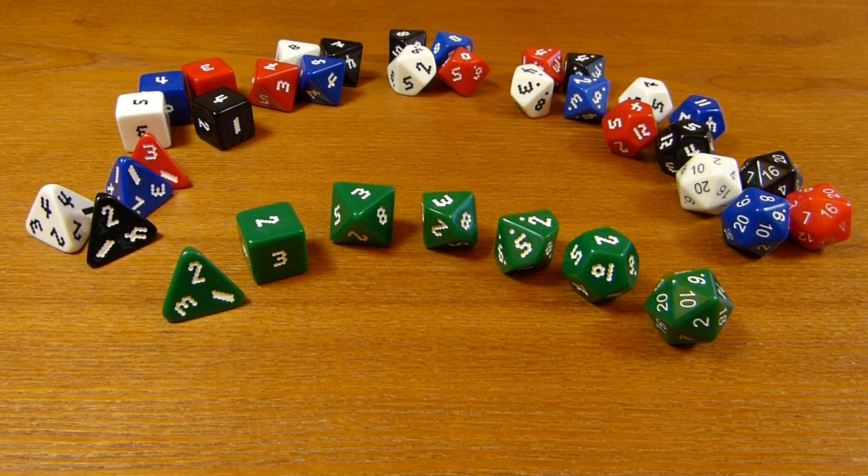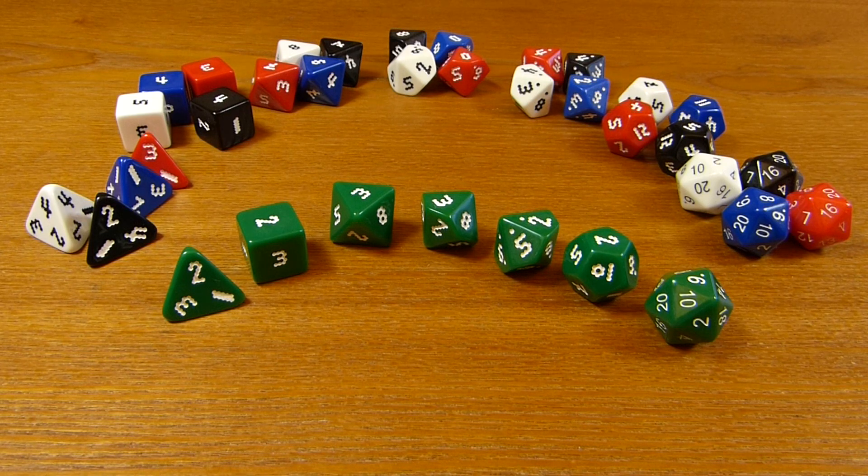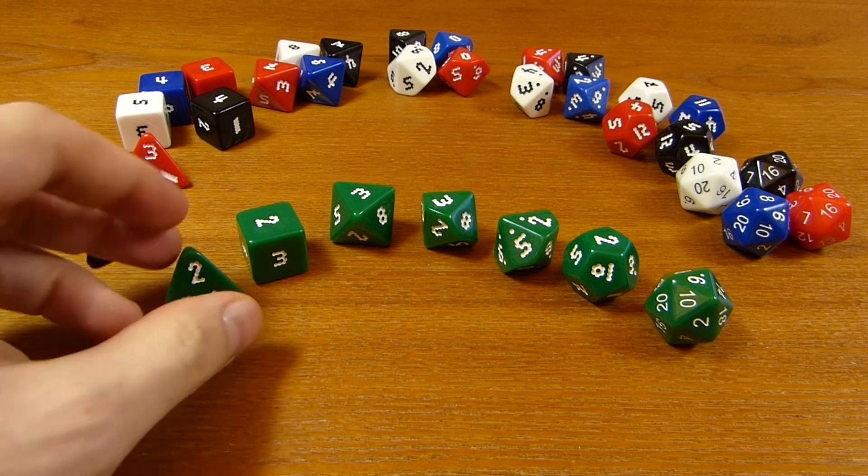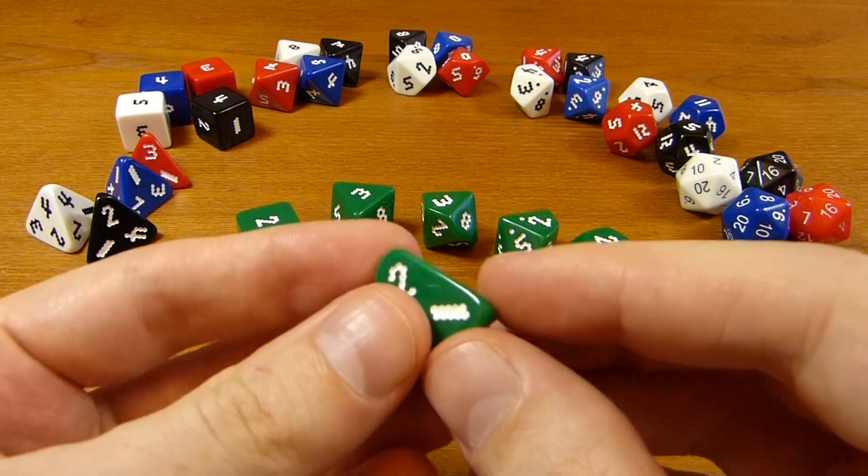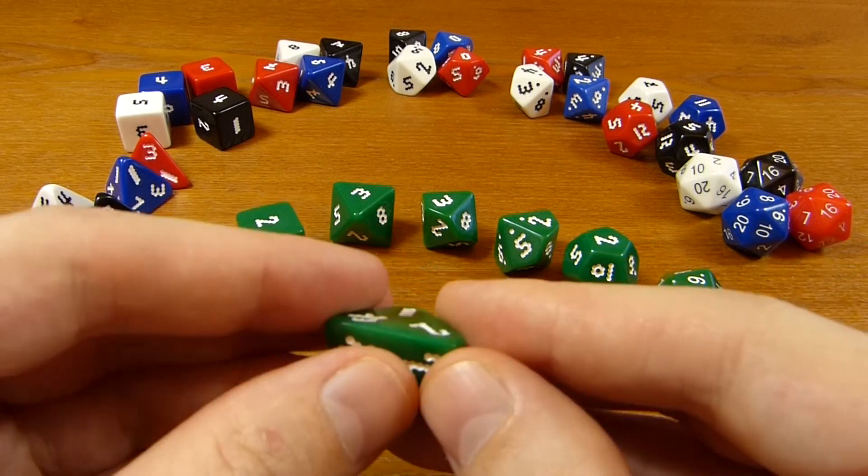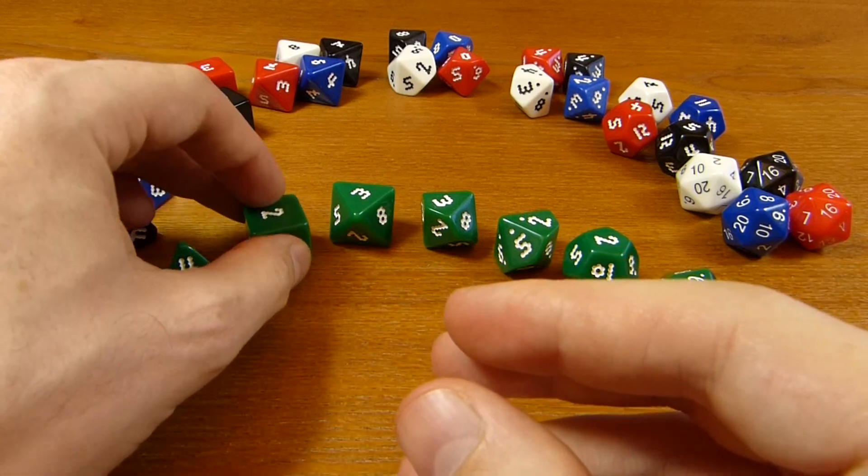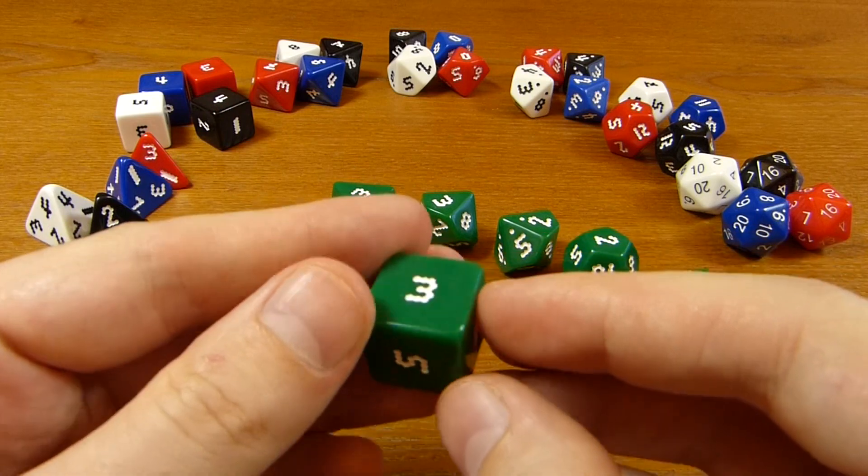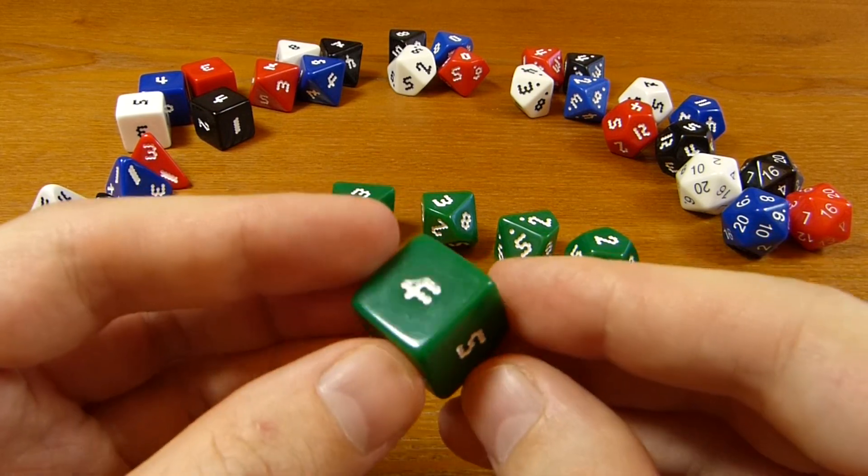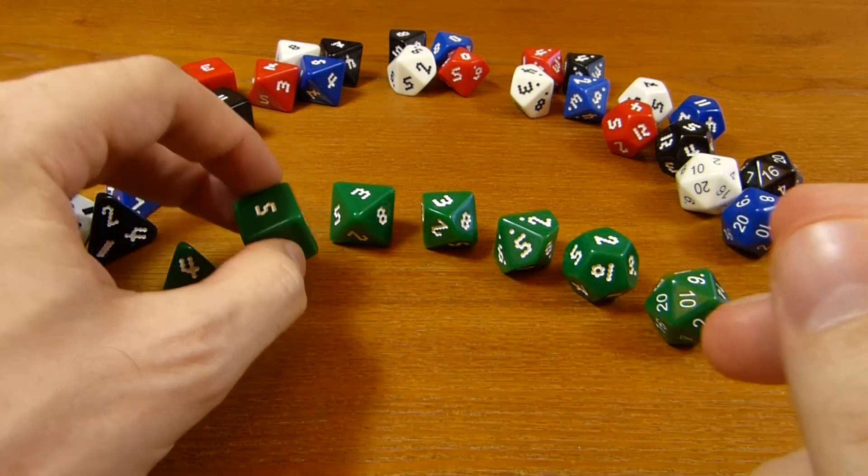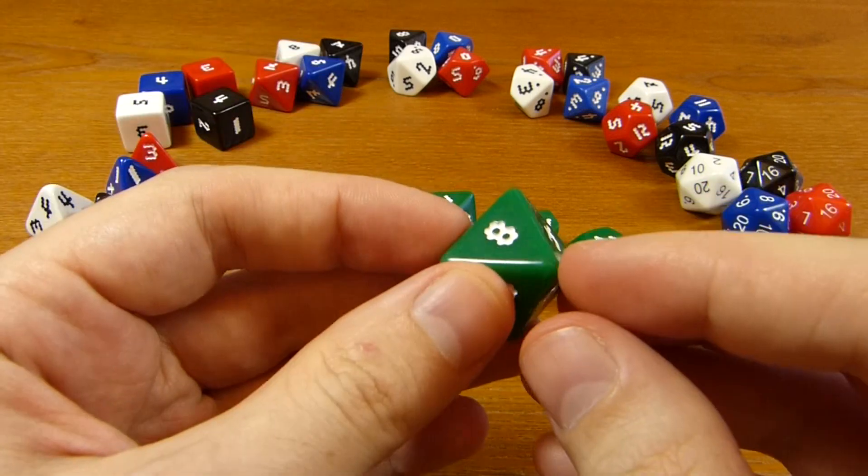Hi, my name is Henry Segerman. This is the OptiDice set by the DiceLab. The DiceLab is myself and Robert Fathauer. So this is Opti as in optimal. This is our attempt to make as good a set of the standard seven dice as you can using injection molding technology.